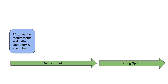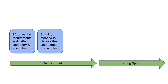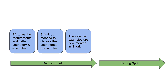Looking at the BDD workflow in terms of a sprint, it starts before the sprint begins. In the before-sprint phase, the business analyst takes requirements from the business owner, writes user stories and examples, and then the three amigos meeting takes place where the business analyst discusses with testing and development team representatives. They discuss the stories and examples to define the system behavior, and then the agreed examples are documented in a specification language like Gherkin.